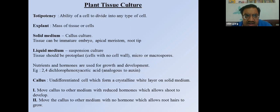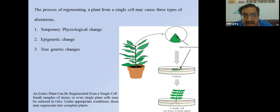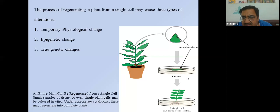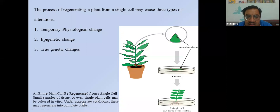A brief recap of plant tissue culture: totipotency is the ability of a cell to divide. Explant, solid medium, liquid medium (suspension culture), nutrient medium with hormones, and callus as an undifferentiated cell mass are all concepts we have studied. A single cell — for example, a single apical meristem cell — can create a whole plant. Small samples of tissue or even a single plant cell may be cultured in vitro under appropriate conditions and may regenerate into a complete plant.